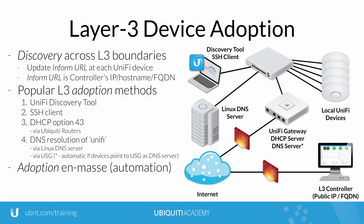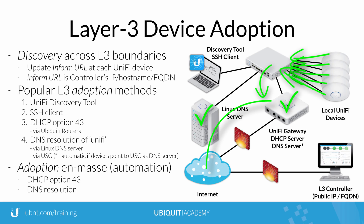Among the four methods for updating a Unify device's Inform URL, DHCP Option 43 and DNS Resolution trigger auto-discovery for adoption en masse, and therefore are very useful for large-scale deployments.